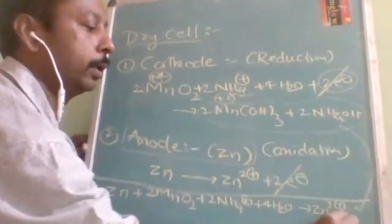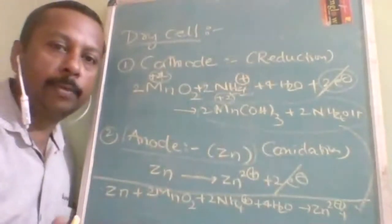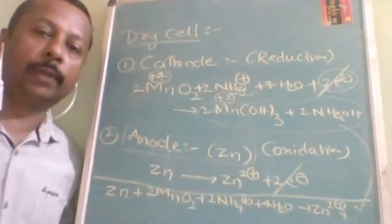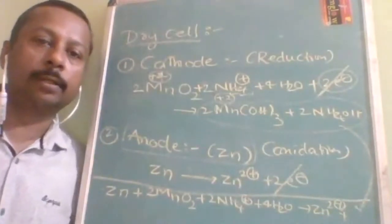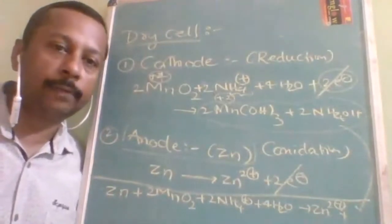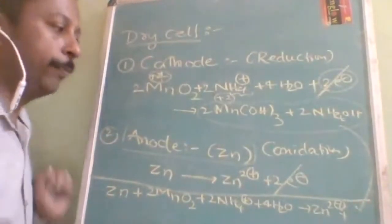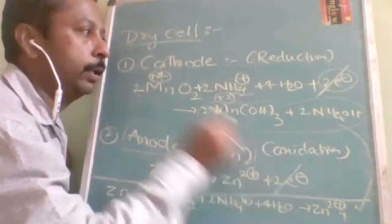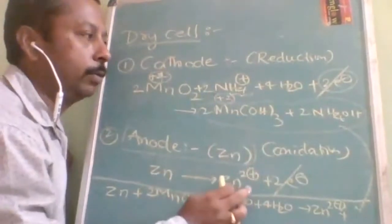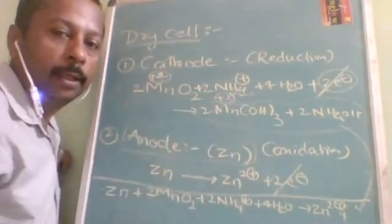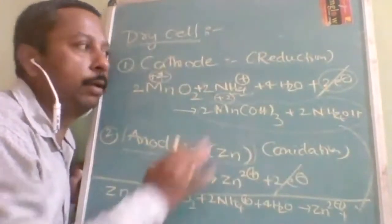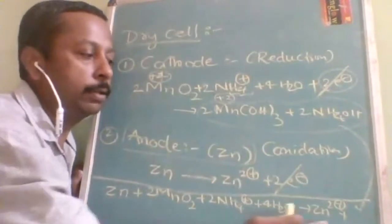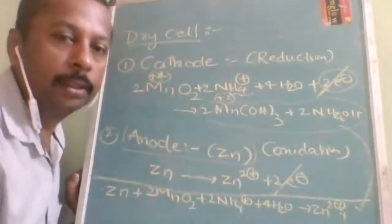When writing the net reaction: Zn + 2MnO2 + 2NH4⁺ + 4H2O → Zn²⁺ + 2Mn(OH)3 + 2NH4OH. Remember, the net reaction should not contain any electrons. If one reaction loses three electrons and another requires two, multiply accordingly so electrons cancel. The number of electrons lost at anode must equal electrons gained at cathode.